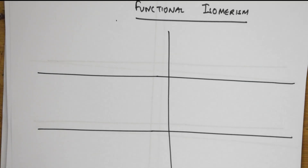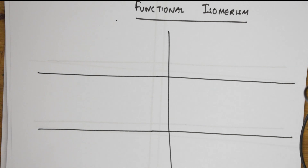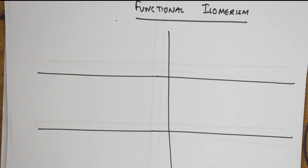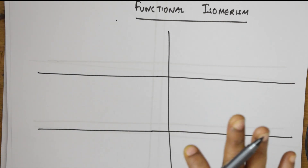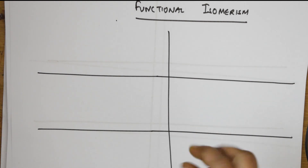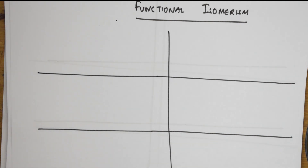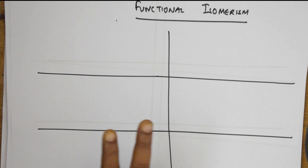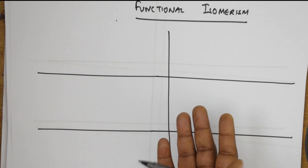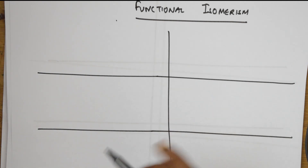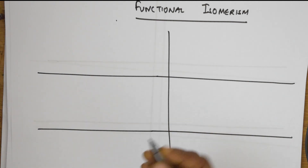Welcome back students. Now we will be learning about the next type of isomerism - functional isomerism. We have already seen chain isomerism, nuclear or structural isomerism, and position isomerism. Today's class we will be studying functional isomerism. As the name suggests, any two compounds having the same molecular formula but possessing different functional groups are called functional isomers, and the phenomenon is called functional isomerism.